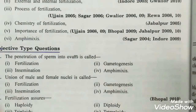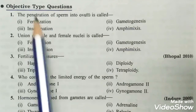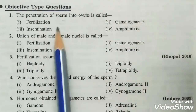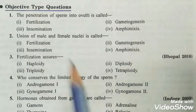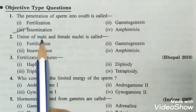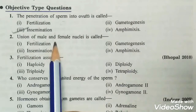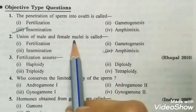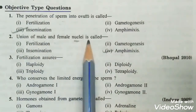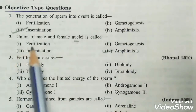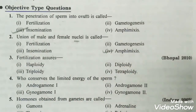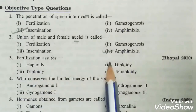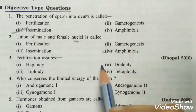Now for objective type questions. Question 1: penetration of sperm into ovum is called — the right answer is insemination. Question 2: union of male and female nuclei is known as — the right answer is amphimixis, because if it were gametes the answer would be fertilization, but here it is nuclei. Question 3: fertilization assures — the right answer is diploidy.